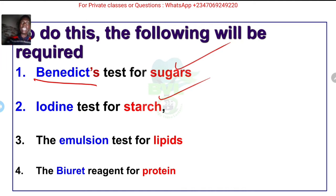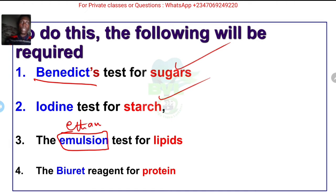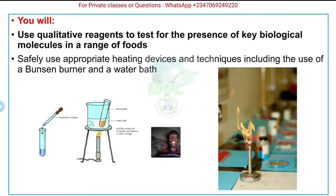Benedict reagent and Benedict test mean the same thing - you can mention the name of the scientist or the reagent itself, either way is fine. This test is called the emulsion test because an emulsion is going to be formed, but what you actually use to do it is ethanol - we'll see that in the course of this series.